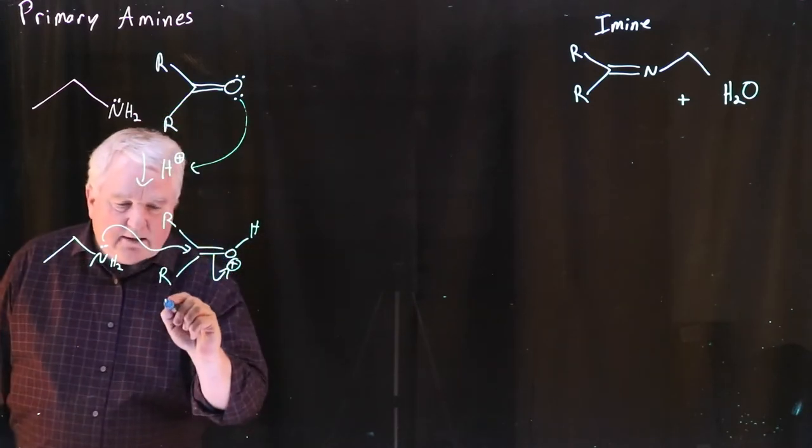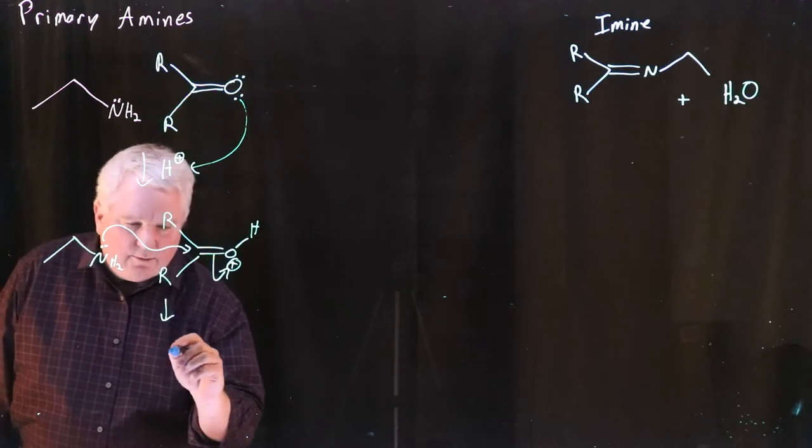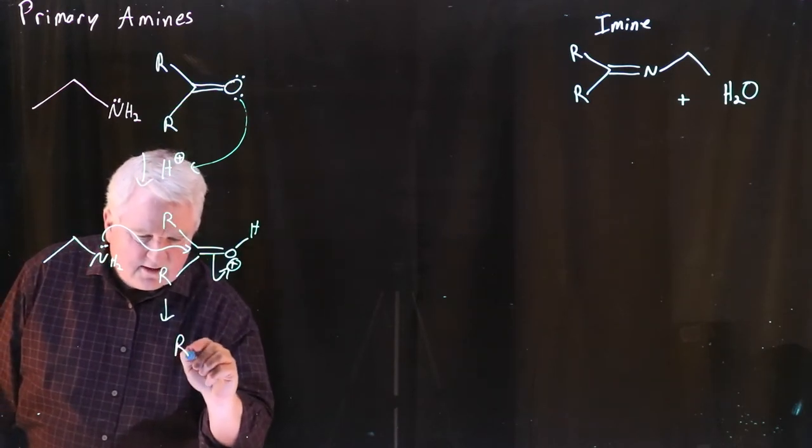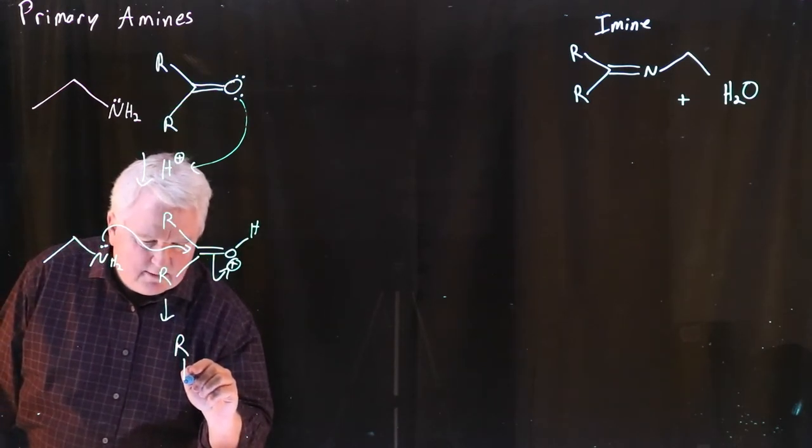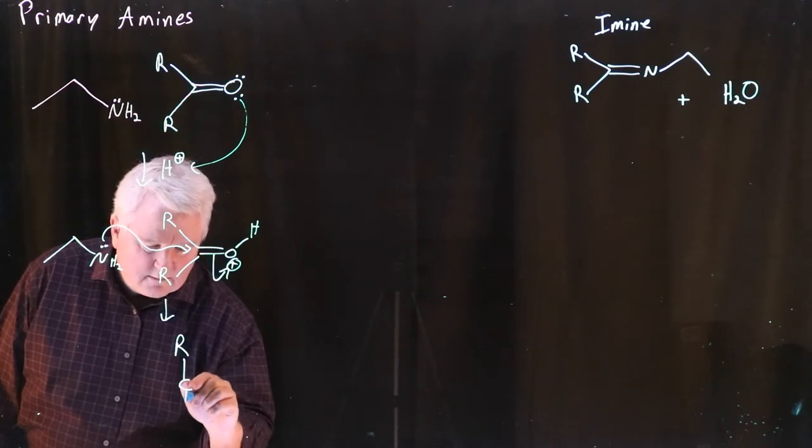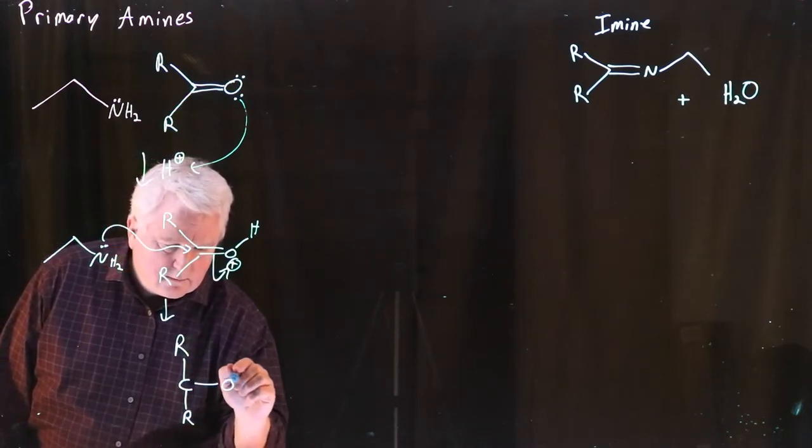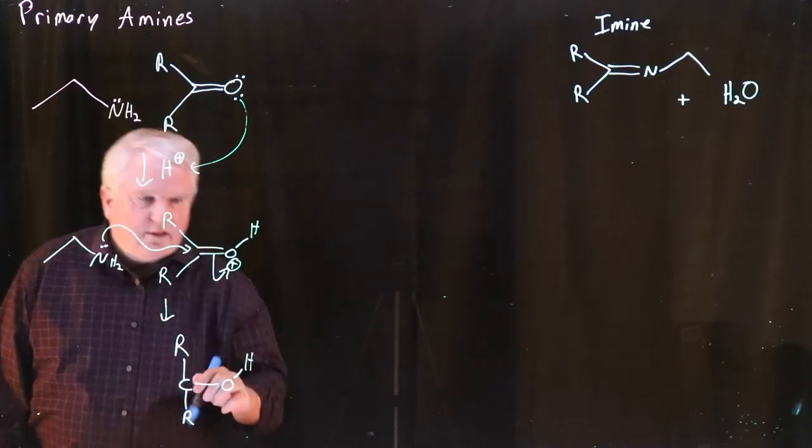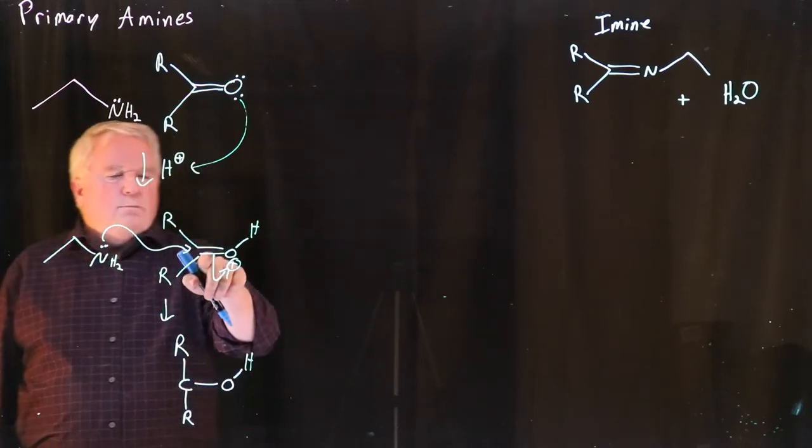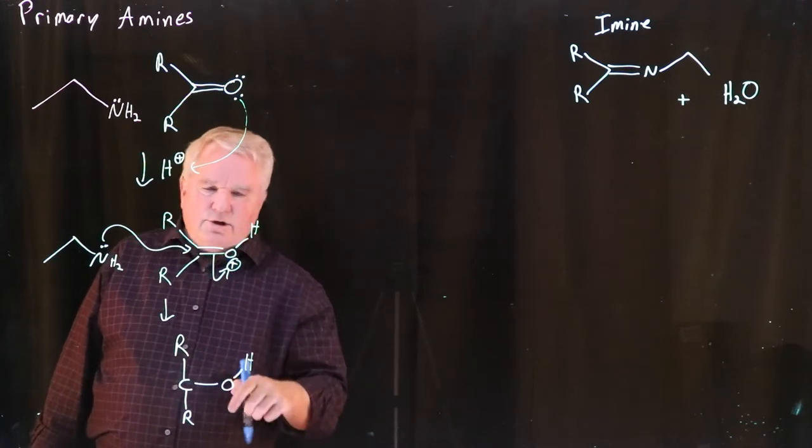And when we do that, we get a new intermediate, and we have our tetrahedral intermediate. Take a look. We've broken that double bond, promoted the electrons from the pi system up onto the oxygen.